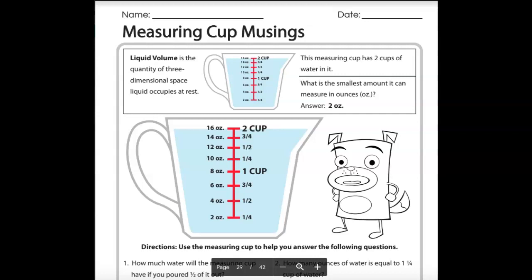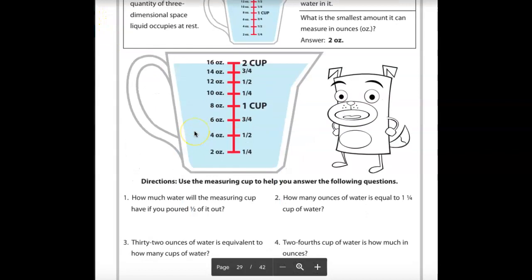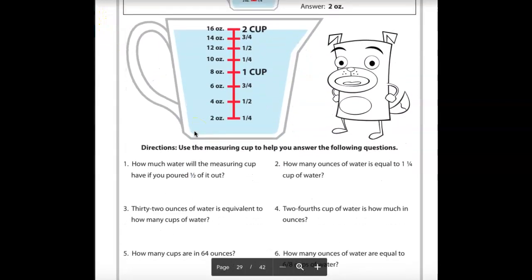So this measuring cup has two cups of water in it because you can see you go all the way up, and it stops at the two-cup mark. What is the smallest amount it can measure in ounces? All right, so you can see the very smallest is the first red line, two ounces is what this cup measures. All right, let's move on to the questions.